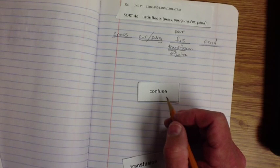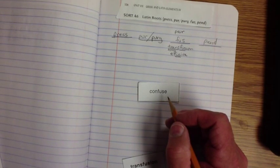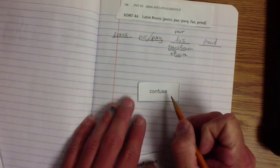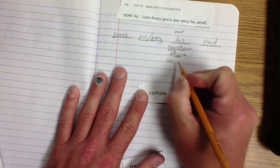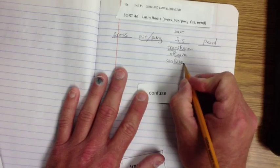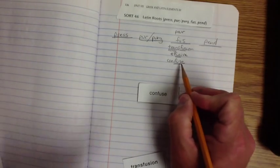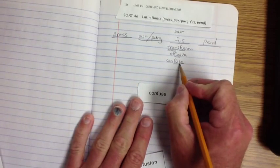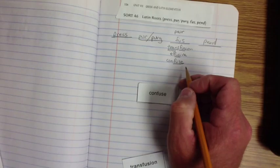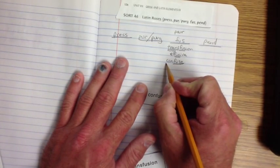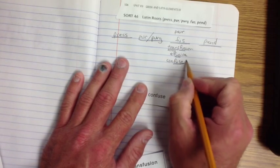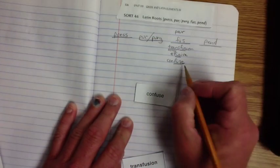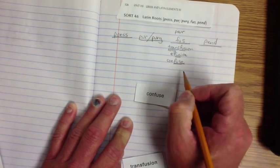Confuse is another one that is interesting. Confuse. Better put an E on the end there. So confuse means pour. But confuse, how am I pouring that? It actually means to pour together. So if I am confused, I've had too much stuff poured into my brain, apparently. So I am confused with that information because it's all been poured into my brain. Transfusion confused. I love it.